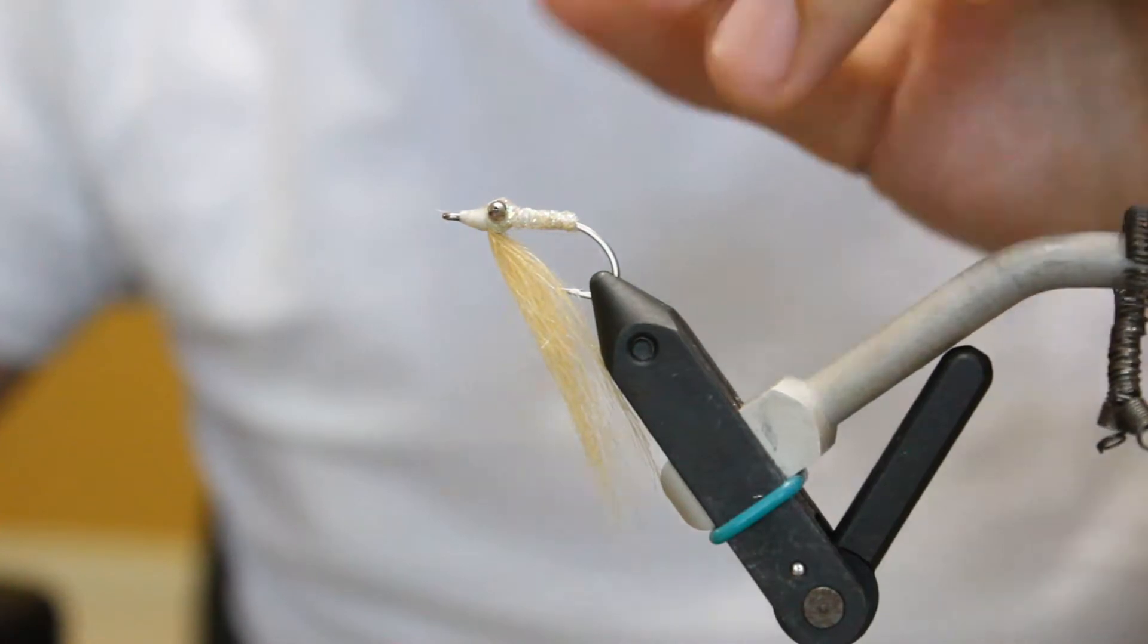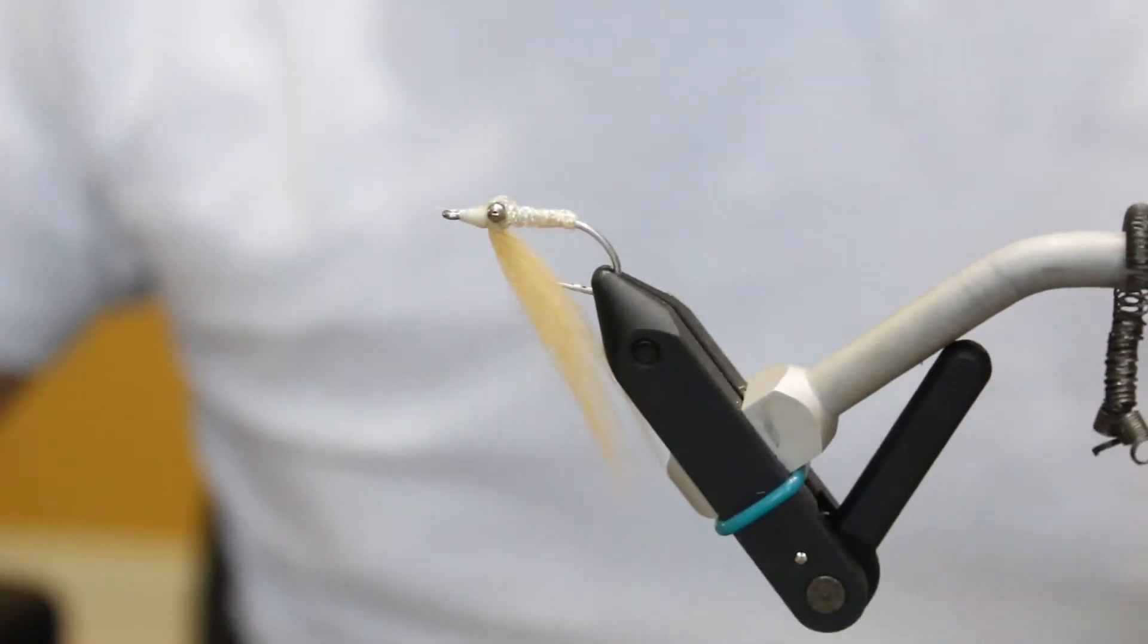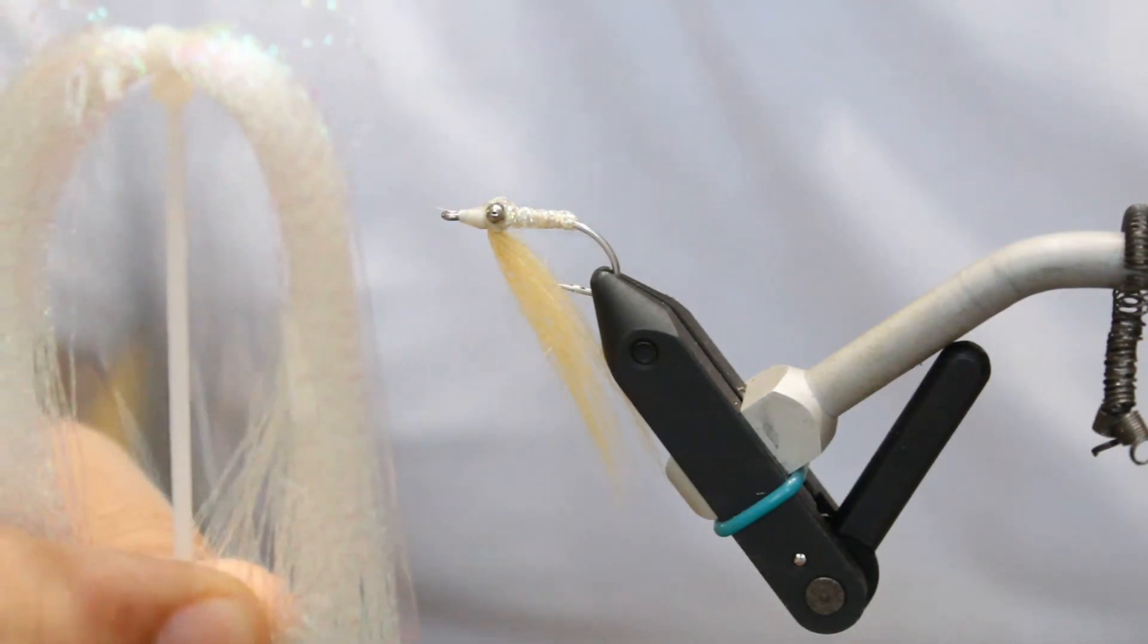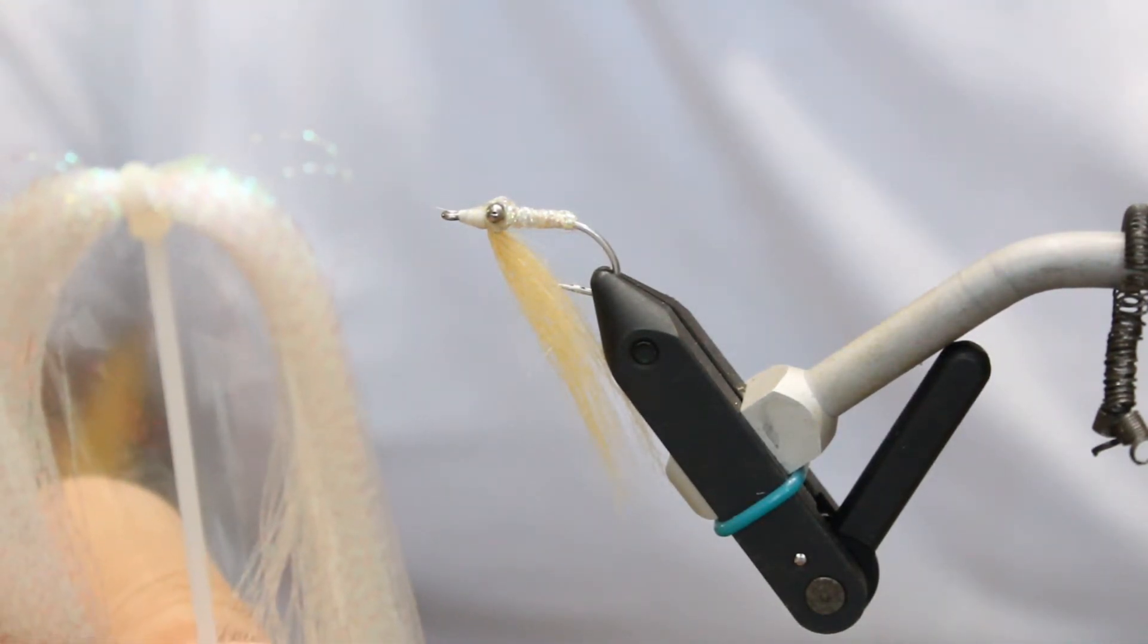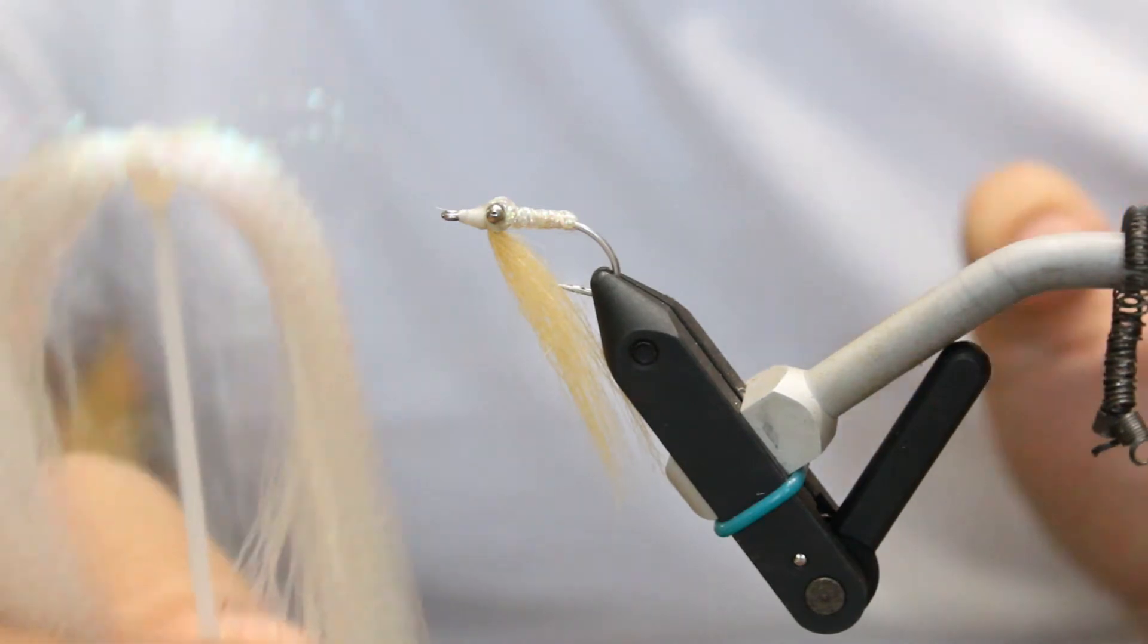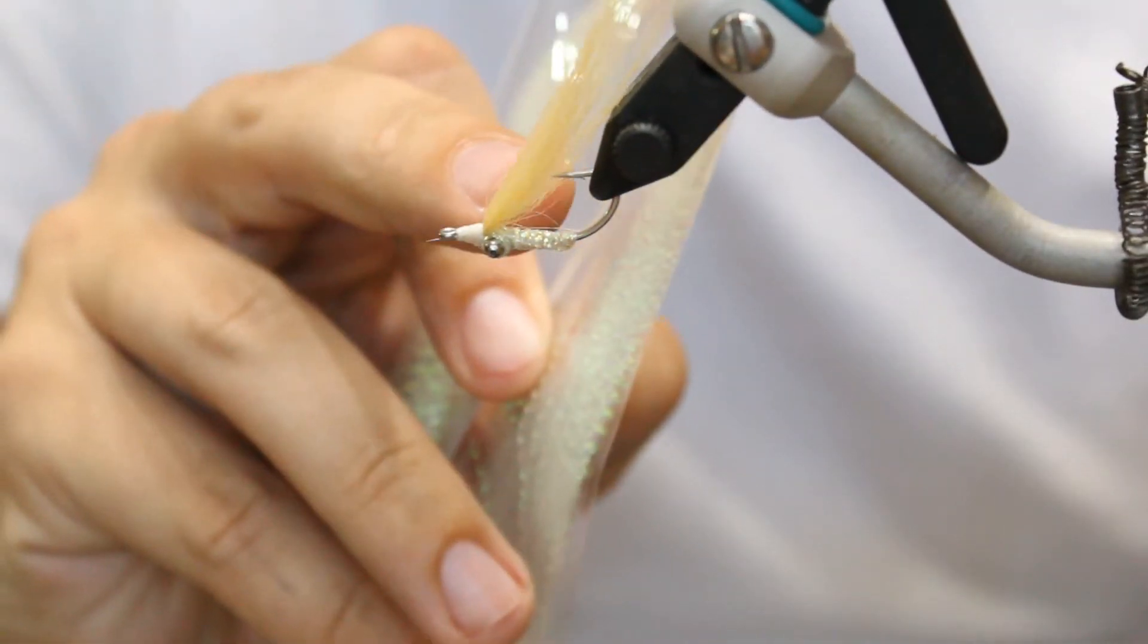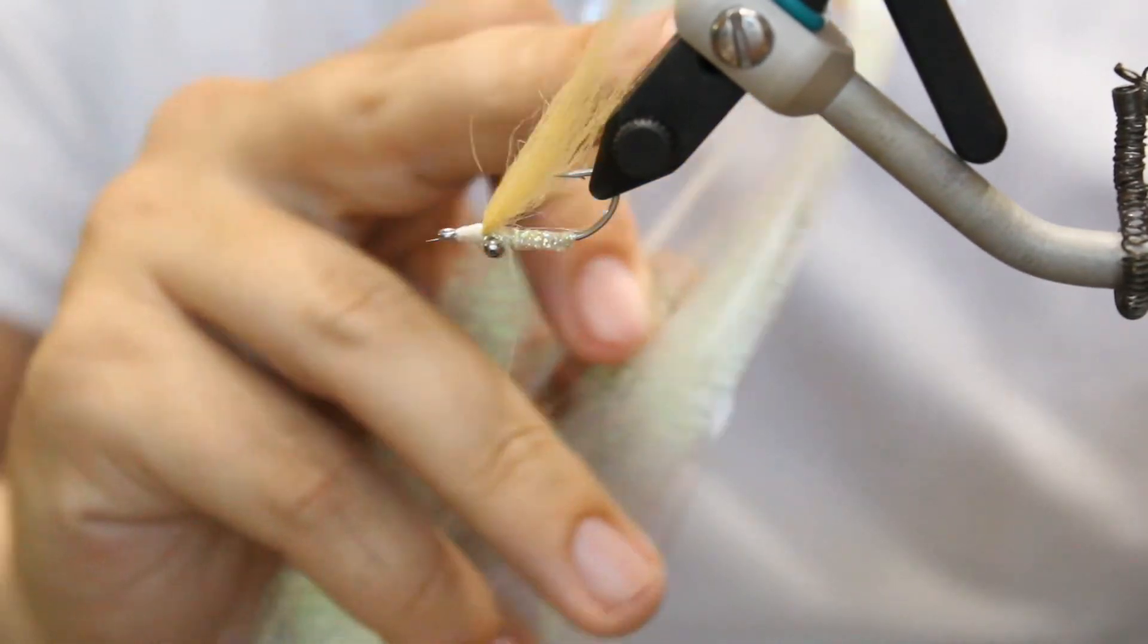You're going to catch a ton of bonefish with these. This is the simplest version. I told you you needed the flash just because I want you to know the option, that you don't need it to be overly flashy. You can tie in flash before you tie in your craft fur and have a little bit in there.